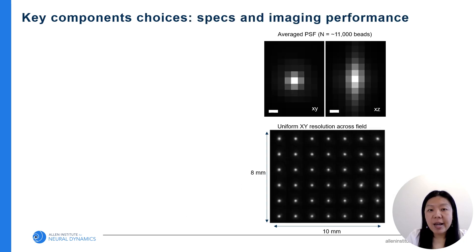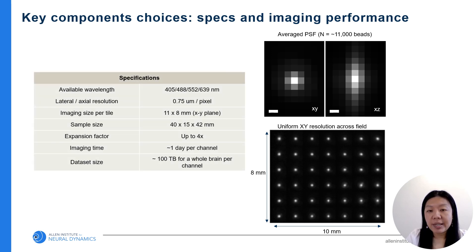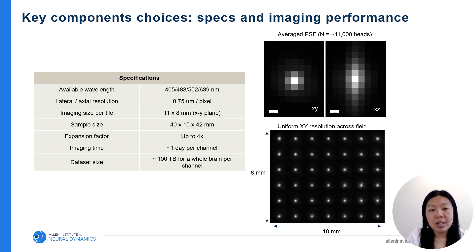This shows the point spread function in the X-Y plane and the X-Z plane. The X-Y resolution is uniform across the entire field of view. Here are the full specifications for the system: it offers four imaging channels, the sample size can be up to 40 by 15 by 42 millimeters, and to finish a whole brain scan with one wavelength, imaging time is about one day producing a dataset of about 100 terabytes.